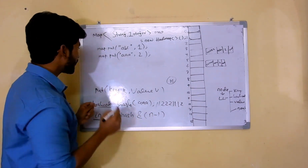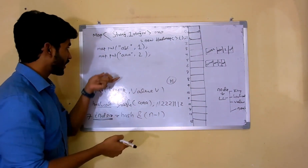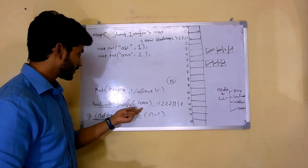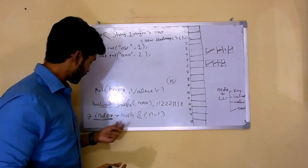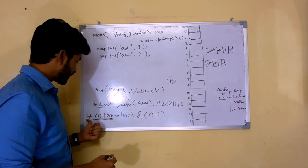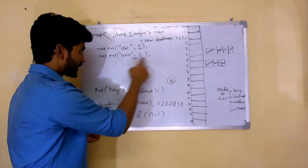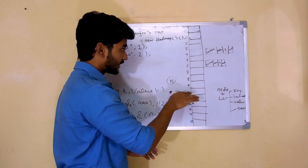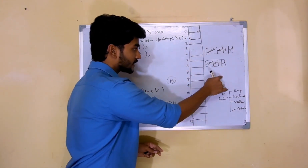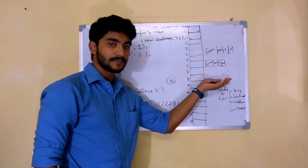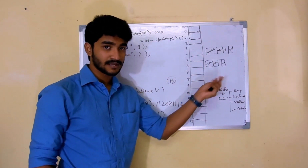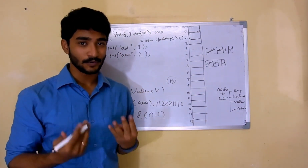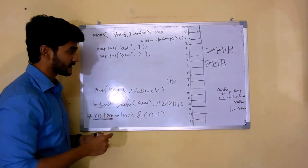Whenever you do a put operation, the hash code is calculated, then the index is computed, and that index number is the bucket where the entry goes. A linked list is created in that bucket, and the value is stored inside it. But what happens when there's a hash collision?